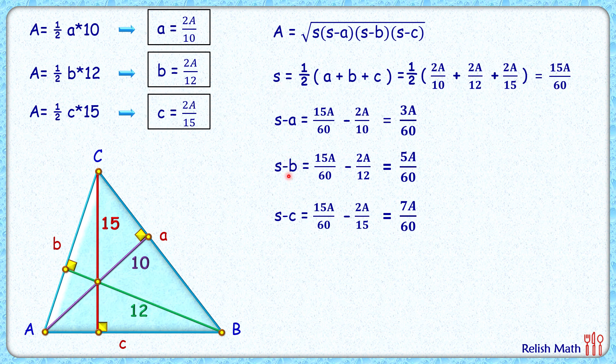Simplifying, the 15 and 60 will cancel, giving us 4 in the denominator. This is 3 times 15; the 15 and 60 will cancel again, giving 4 in the denominator.